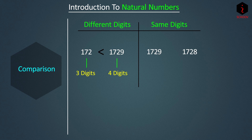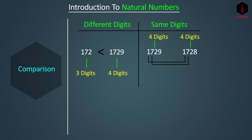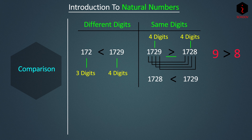When comparing numbers with the same number of digits — for example, 1728 and 1729 — start from the leftmost (highest) place. At thousands both have 1; at hundreds both have 7; at tens both have 2; at ones, 9 is greater than 8, so 1729 is greater than 1728. The '>' symbol means greater than and the '<' symbol means smaller than — the opening always faces the greater number.